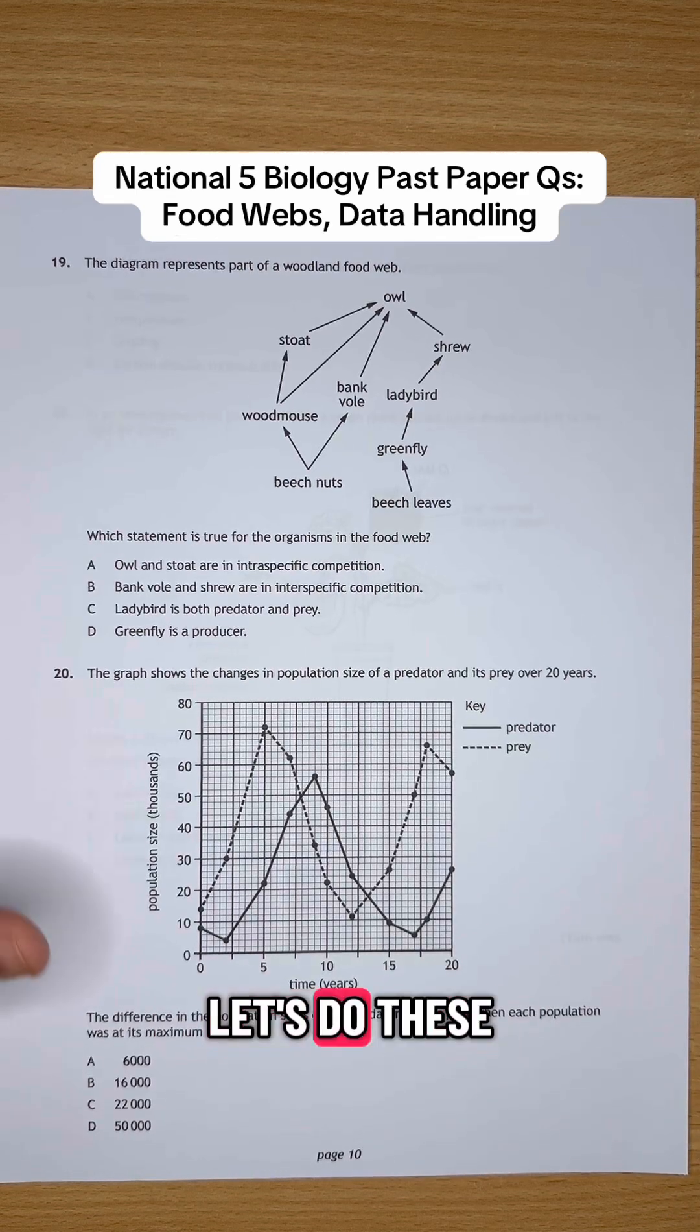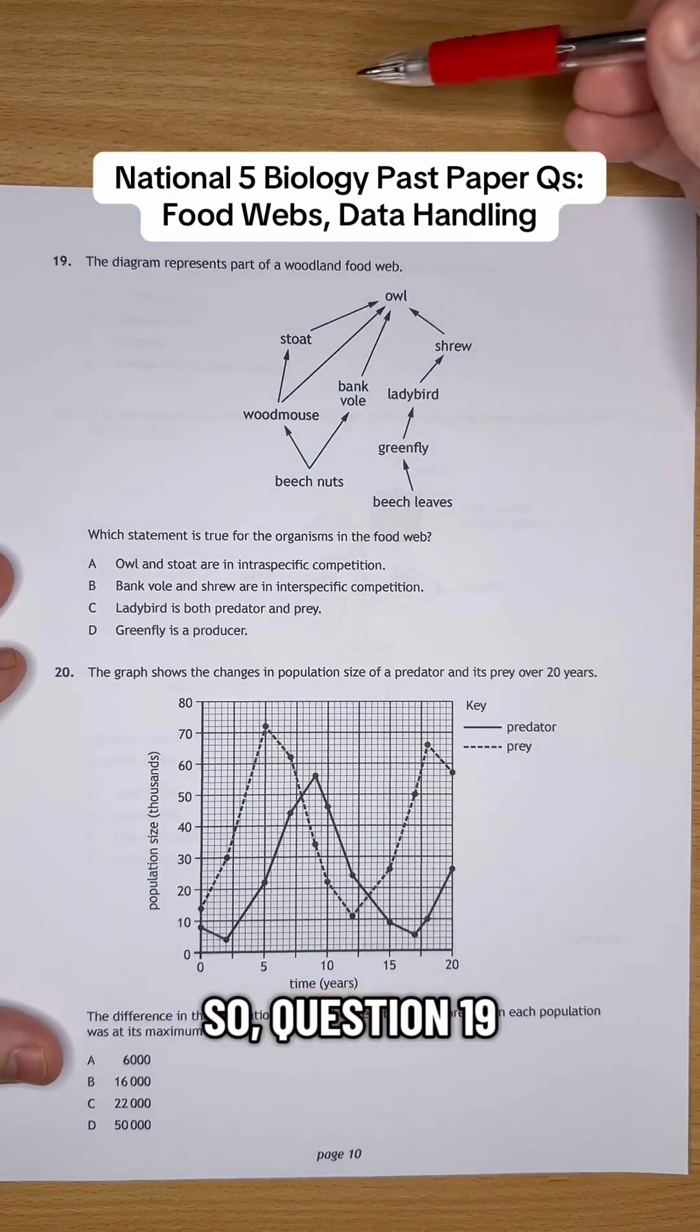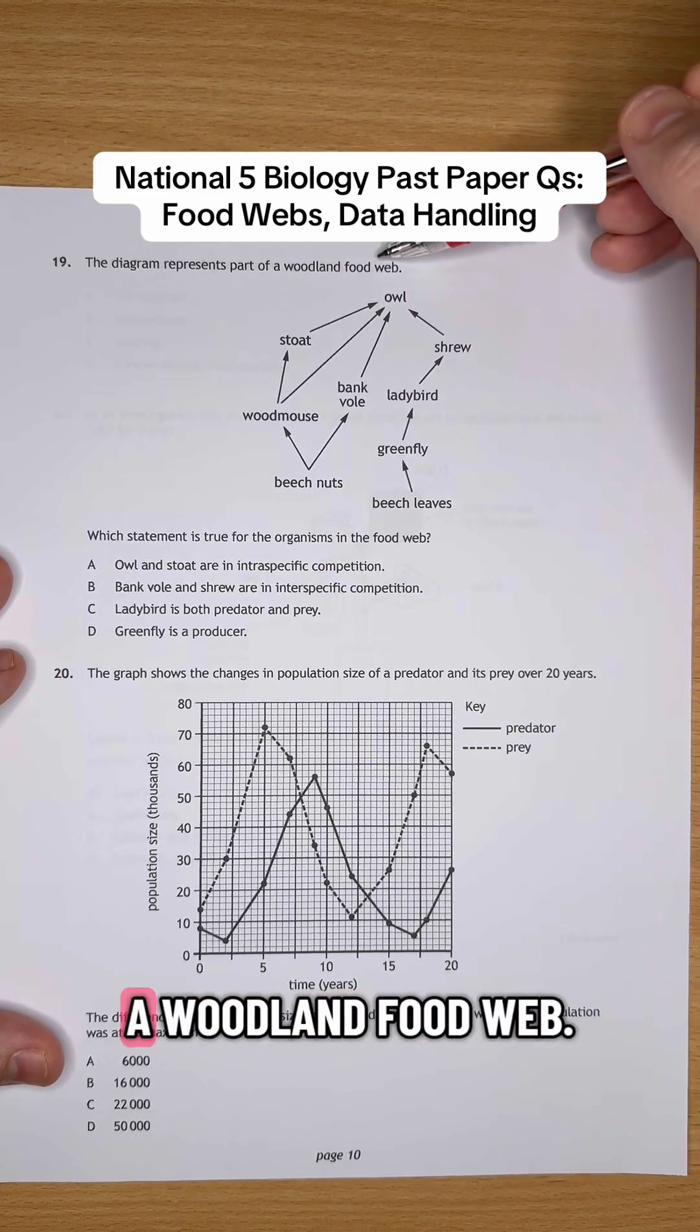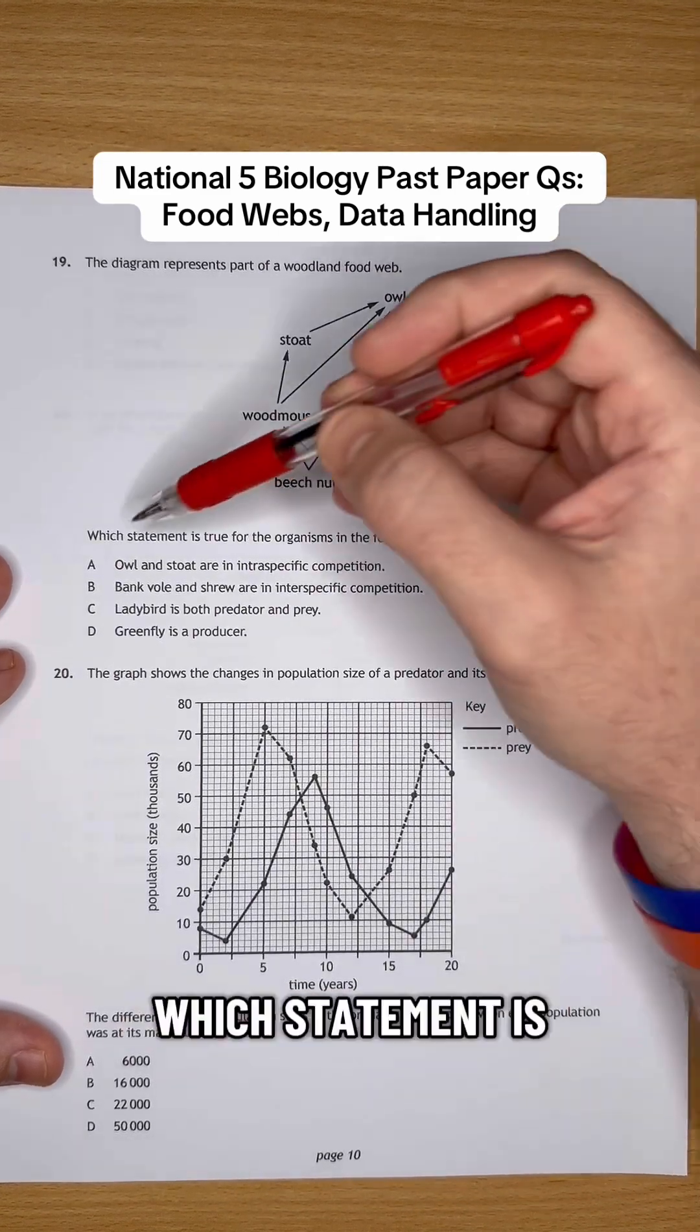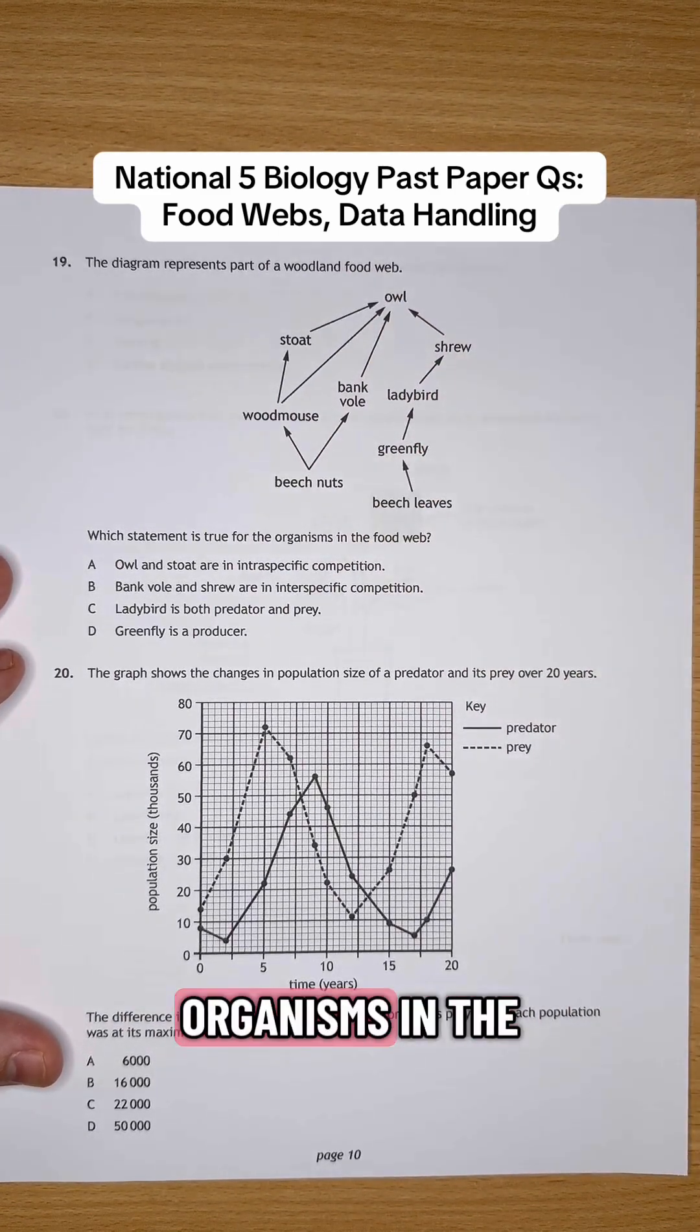National 5 biology students, let's do these questions together. So question 19 says, the diagram represents part of a woodland food web. Which statement is true for the organisms in the food web?